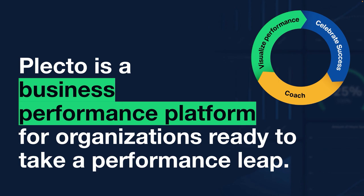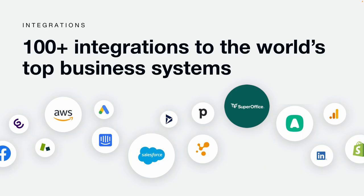If you look at the upper right corner, you see that we have three axes that we work from: visualization of performance, celebration of success, and coaching. But let's start from the beginning, where the journey starts for you, the client. Data gets created in systems, which we also call integrations. And SuperOffice is one of the plus 100 integrations that Plecto offers.